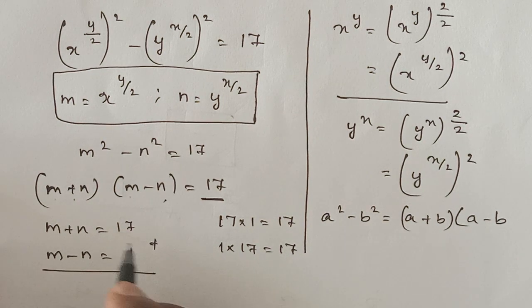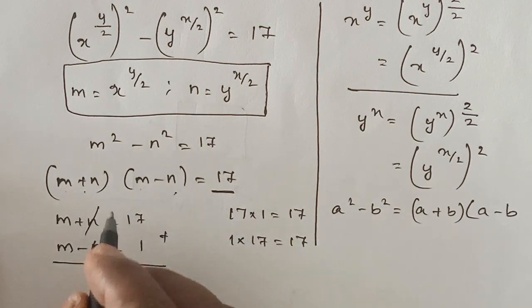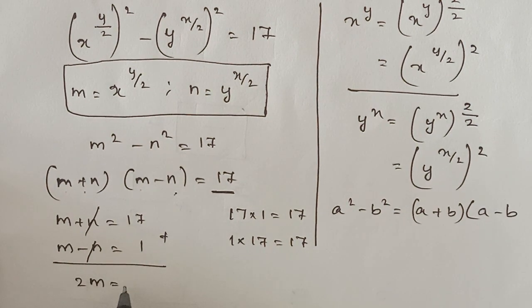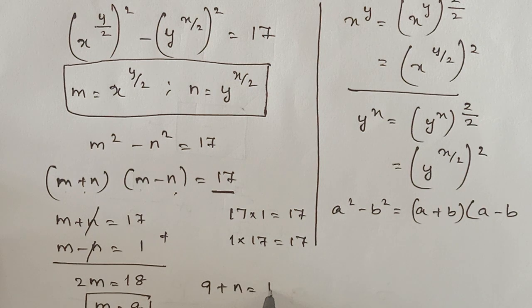When you add these two, 2m is equal to 18, and m is equal to 9. By applying this, 9+n is equal to 17, and n is equal to 8.